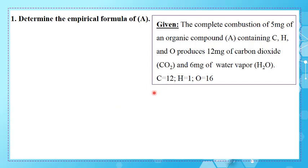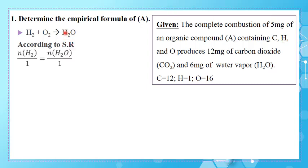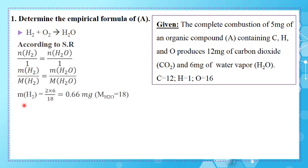Now let's determine the percentage by mass of hydrogen. Water vapor is obtained from the reaction of hydrogen and oxygen, where the hydrogen comes from compound A. According to stoichiometry: moles of H over 1 equals moles of H₂O over 1. So mass of H equals mass of H₂O times the molar mass of H₂ (which is 2) divided by the molar mass of H₂O (which is 18). With 6 mg of water, the mass of hydrogen is 0.66 mg.